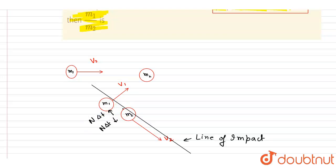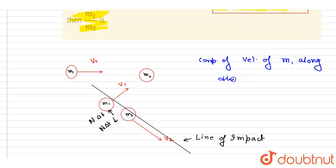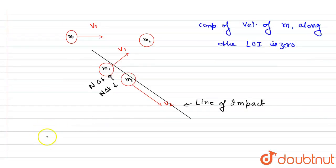Now, m1 is not having any velocity along the line of impact. So I will write down the component of velocity of m1 along the line of impact — it is zero. What we can conclude from this is that there is no component of m1's velocity along the line of impact after the collision.